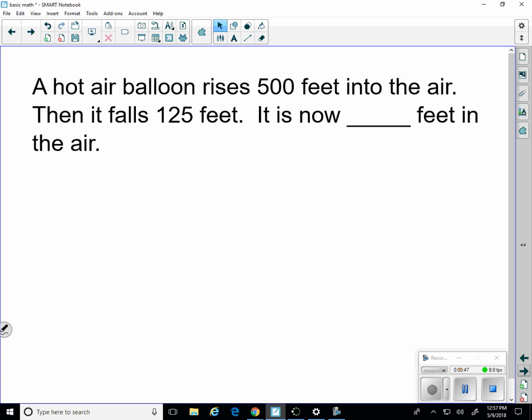A hot air balloon rises 500 feet into the air and it falls 125 feet. It's now how many feet in the air? 500 minus the 125, 375 feet.